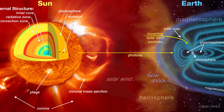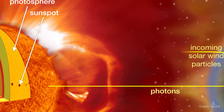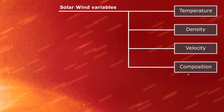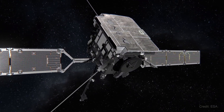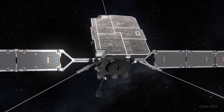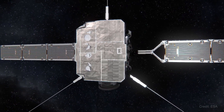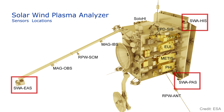The solar wind has many variables that are important to understand when constructing a model of how it interacts with the Sun and the rest of the solar system. Some of these variables are temperature, density, velocity, and of course composition. The Solar Orbiter has 10 scientific instruments on board to measure these variables and other aspects of the Sun — four in situ and six remote sensing. In this video, we're going to take a detailed look at an instrument called the Solar Wind Plasma Analyzer, or SWA for short. This is the instrument responsible for collecting data on the solar wind.